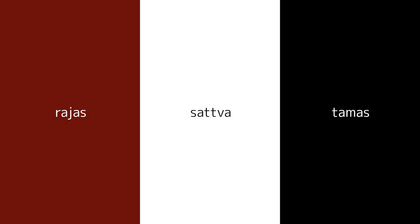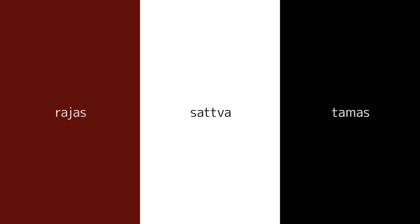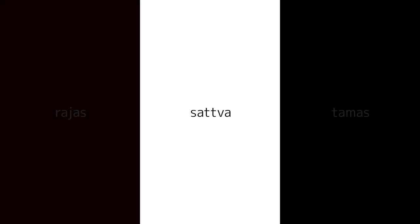The three gunas are never separate. They support one another and intermingle with one another. These three attributes are present in all matter in different proportions. There might be a dominance of one attribute, but nothing that can be defined as matter is devoid of any attribute. In some, tamas is dominant; in some, rajas is the dominant one; and in some, sattva is the dominating one.